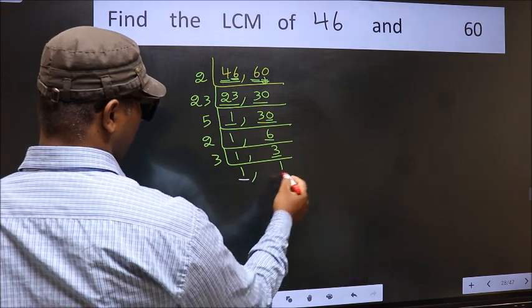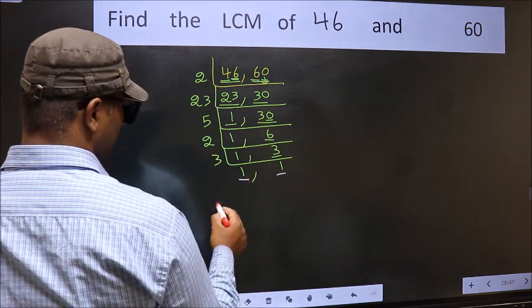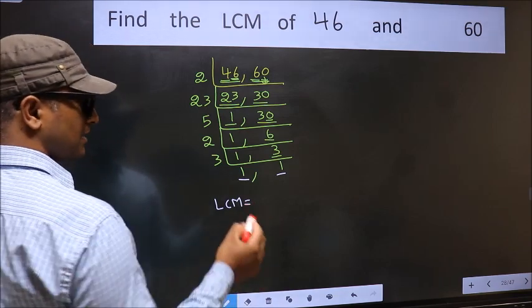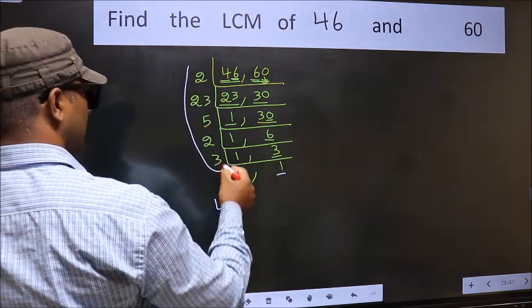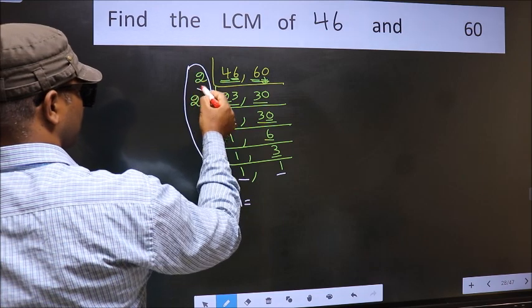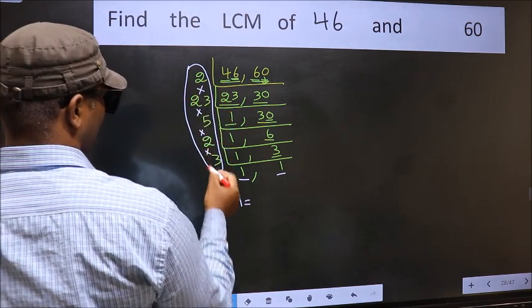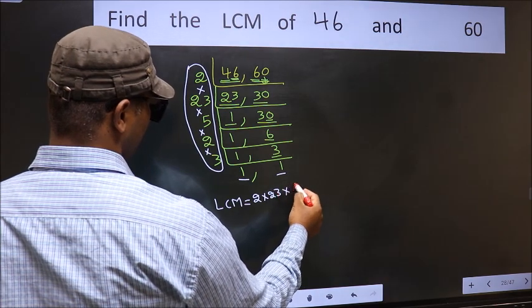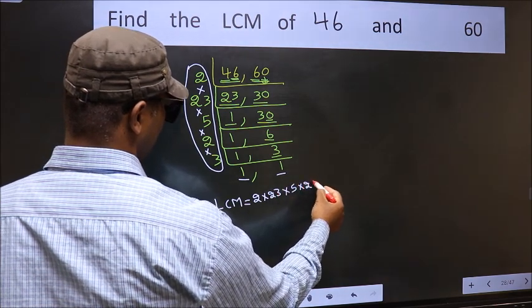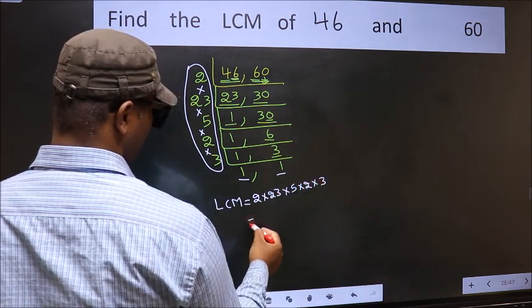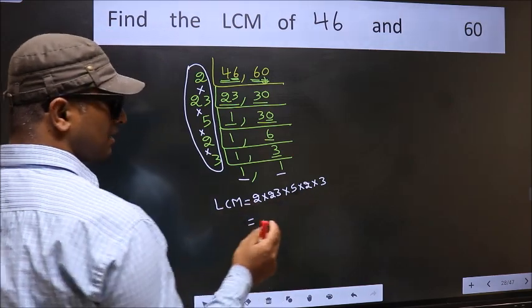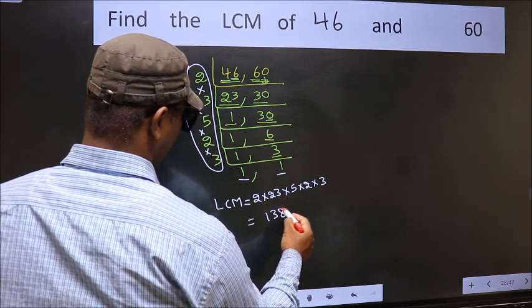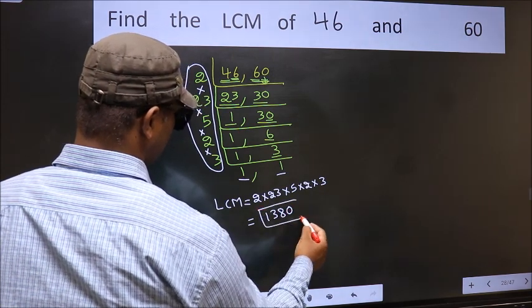So we got 1 in both places. So our LCM is the product of these numbers: 2 into 23 into 5 into 2 into 3. When we multiply these numbers, we get 1380 is our LCM.